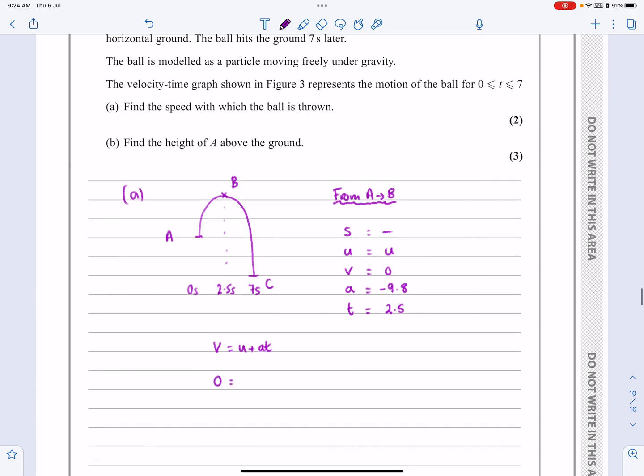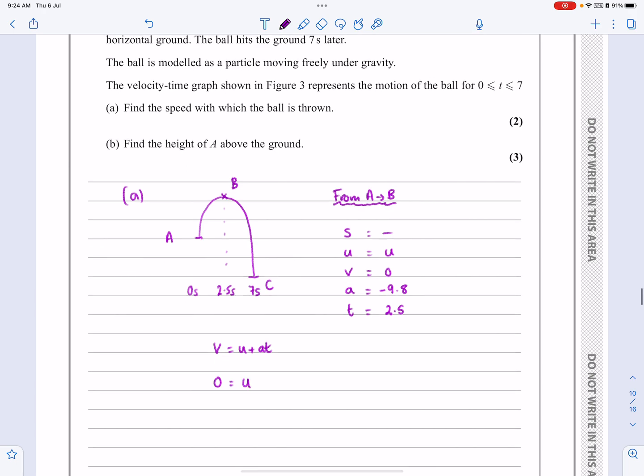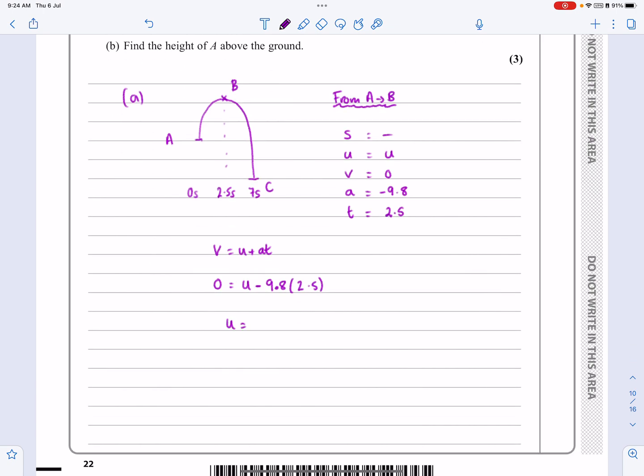So 0 is equal to U minus 9.8, just go back and write it a bit neater, minus 9.8 times 2.5. And so U will just work out to be 24.5 meters per second. But then remember, if you were using G as 9.8, we've already decided there then that that's 2 significant figures. So I should really call that 25 meters per second.